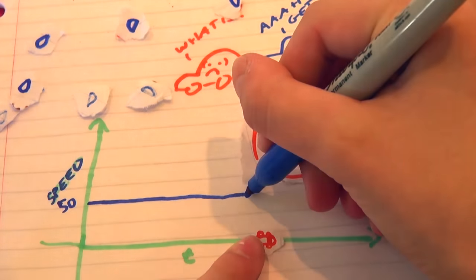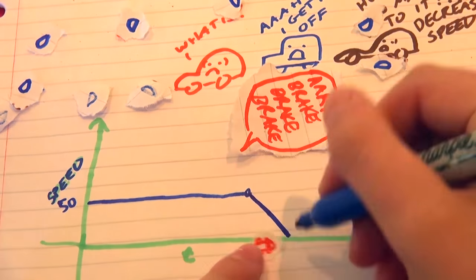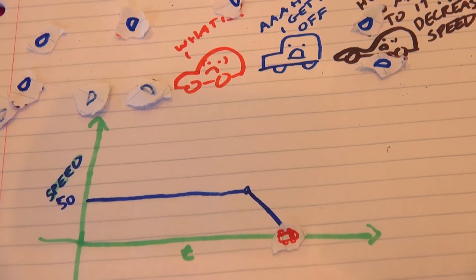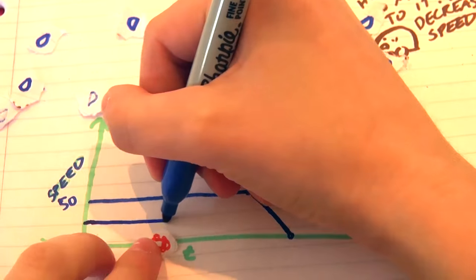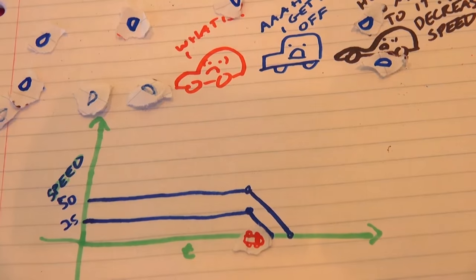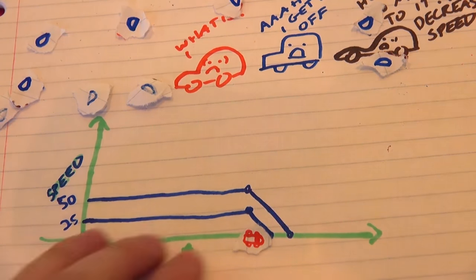But then, oh no, something's in front of you, so you slam on the brakes. Now your speed is decreasing, decreasing until you hit a speed of zero and stop. If you're at a slower speed to begin with, then this line intersects zero earlier. You can stop faster. So far, so obvious.